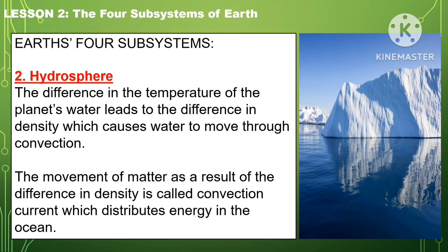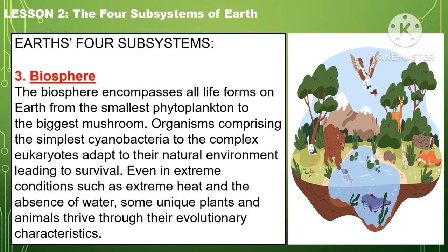The movement of matter as a result of the difference in density is called the convection current, which distributes energy in the ocean.